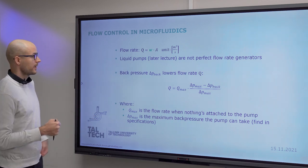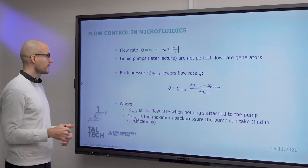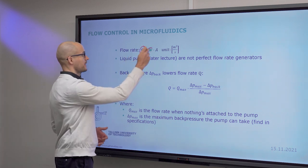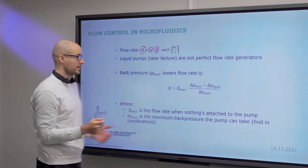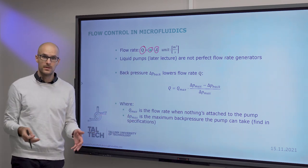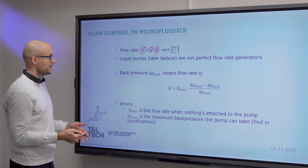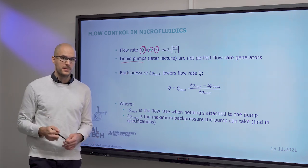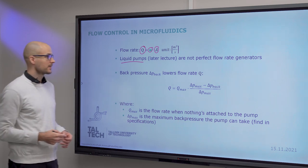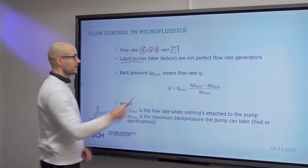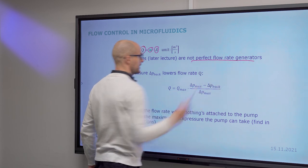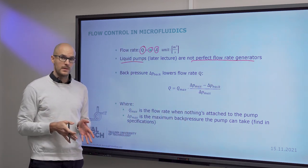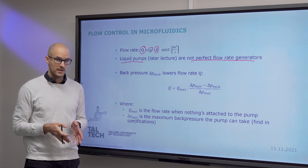And about flow control. So it's one thing to know the flow rate, which is just flow velocity multiplied by channel cross-section. Unit is cubic meters per second. We will talk about liquid pumps in another lecture, in the lecture about actuators. They are not perfect flow rate generators. So if you remember, microfluidic flows are pressure driven, most commonly.